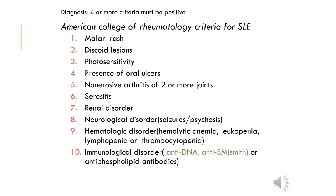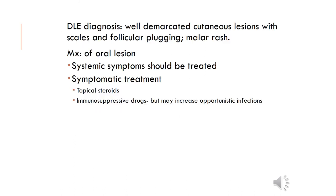There are four or more criteria from the American College of Rheumatology classification for SLE that must be positive: malar rash, discoid lesion, photosensitivity, presence of oral ulcers, non-erosive arthritis of two or more joints, serositis, renal disorders, neurological, hematological, or immunological disorders. Diagnosis of DLE includes well-demarcated cutaneous lesions with scales and follicular plugging (malar rash), but when oral manifestations are the first sign, biopsy is needed to confirm. Management involves treating systemic symptoms first, then administering symptomatic treatment with topical steroids and immunosuppressive drugs, keeping in mind the risk of opportunistic infections.